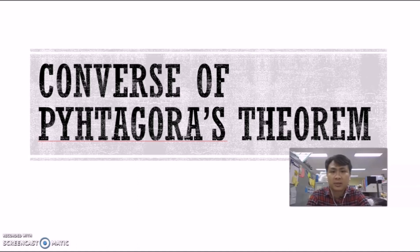Now in the Converse of Pythagoras' Theorem, we are working in reverse. What you are having now is the question will actually give you the three values of the triangle, but you don't know whether it's a right angle triangle. So what you need to do is find out the values and then make comparisons. And after you make comparisons, you will be able to determine whether or not it's a right angle triangle. So that's the nature of the Converse.